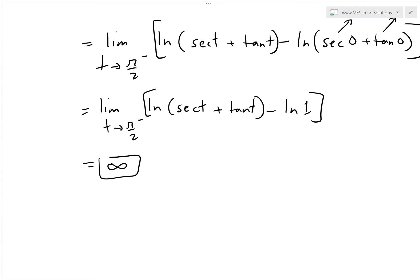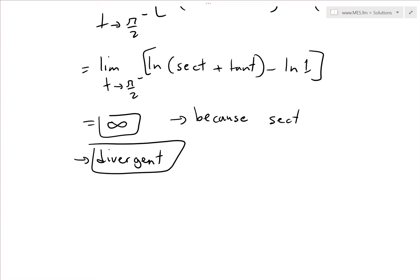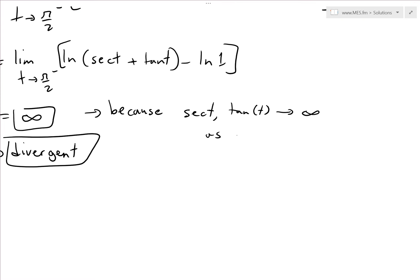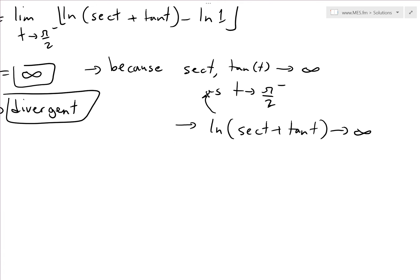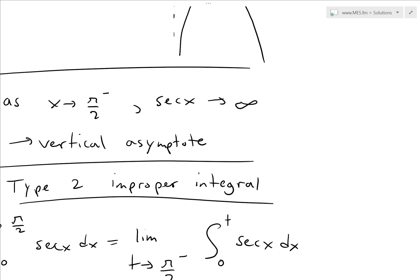Since both secant t and tan t approach infinity as t approaches π/2 from the left, ln of infinity is also infinity. So this integral is actually divergent — we don't get a finite answer. The limit does not exist; it just goes to infinity. This means the area under the curve from 0 to π/2 of secant x is infinite — an infinite area underneath this curve.